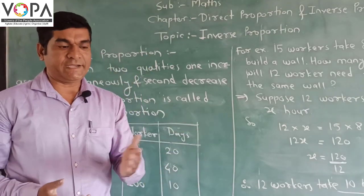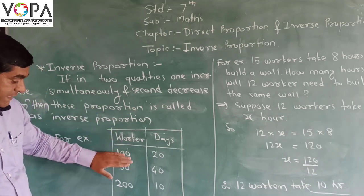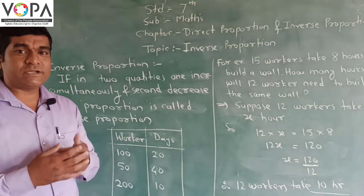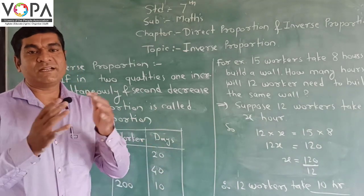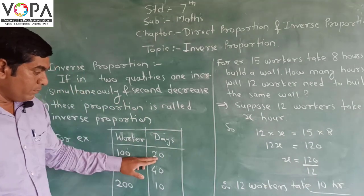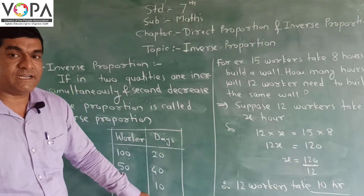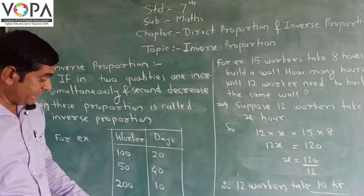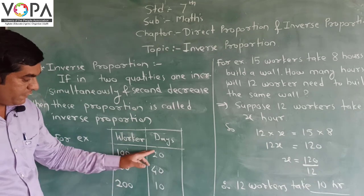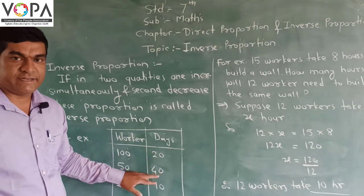Let us take another example. Now we increase the workers. First we take 100 workers. Now we take 200 workers for the same work. How many days required? If workers increase, work is faster and days required are less. At 100 workers, we require 20 days. Now how many days? 10 days. So if workers increase, days decrease. If workers decrease, days increase.